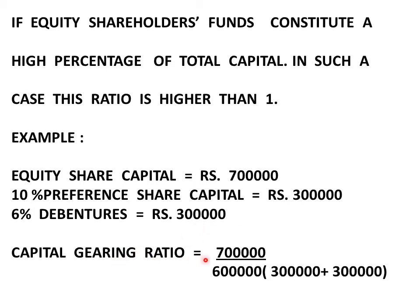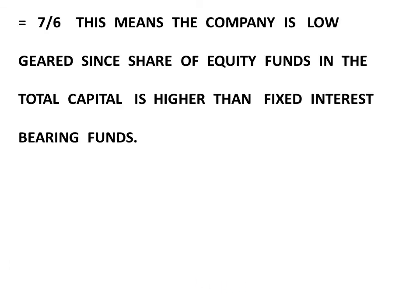So, capital gearing ratio is equal to equity share capital Rs. 7,00,000 divided by fixed interest bearing funds (preference share capital Rs. 3,00,000 plus debentures Rs. 3,00,000), which equals Rs. 7,00,000 divided by Rs. 6,00,000. This means the company is low geared since the share of equity funds in the total capital is higher than fixed interest bearing funds.